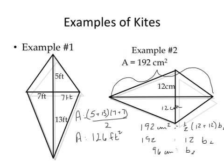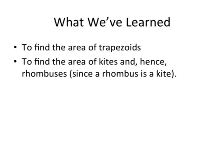That's a pretty big kite there that we've got. So just a couple of examples. So we've learned to find the area of trapezoids. We've learned to find the area of kites. And because a rhombus is a kite, we have also learned to find the area of a rhombus using our diagonal formulas. So that's it for today.